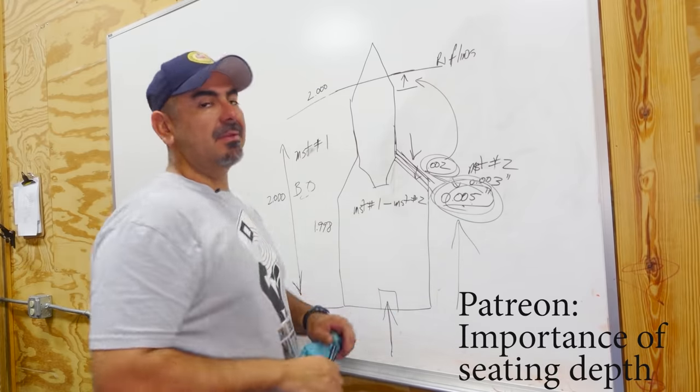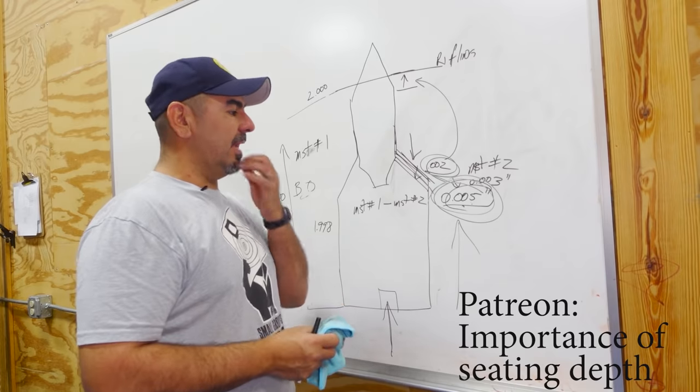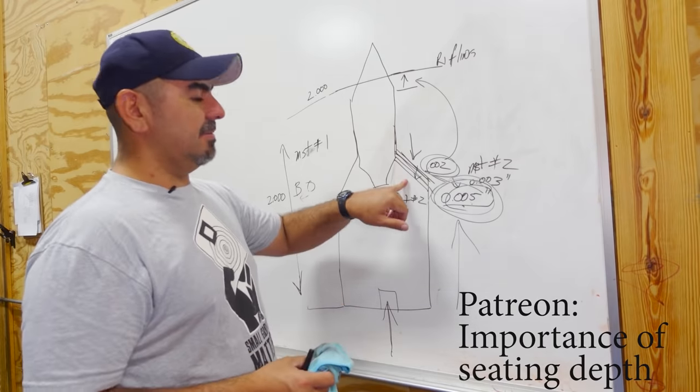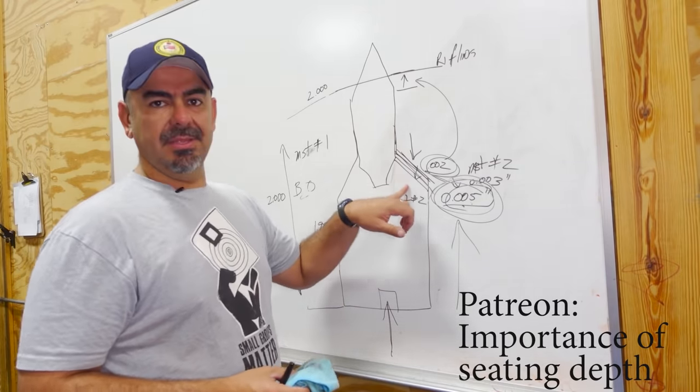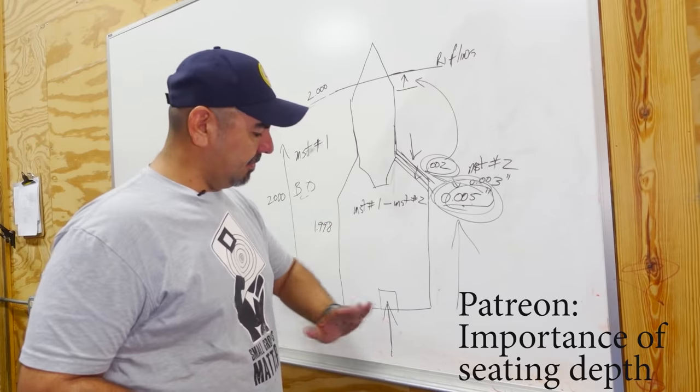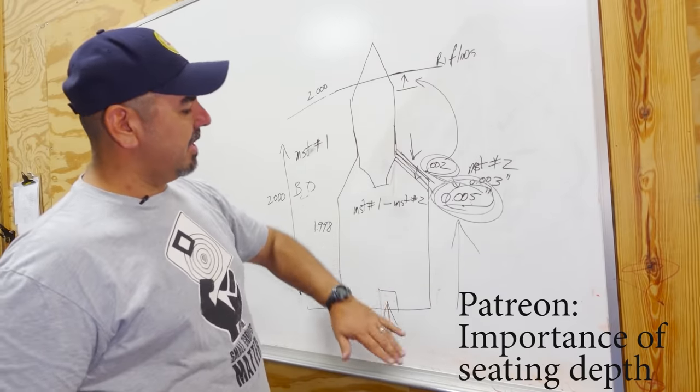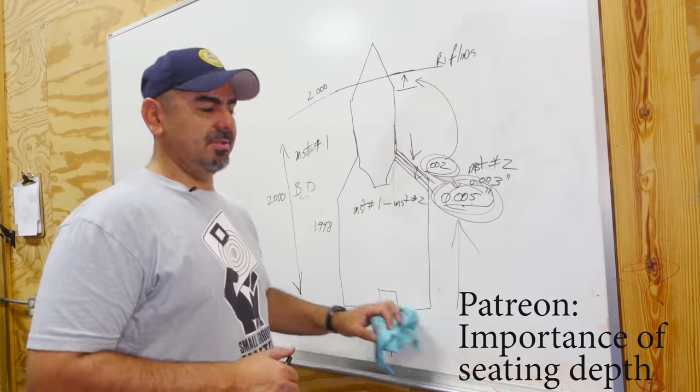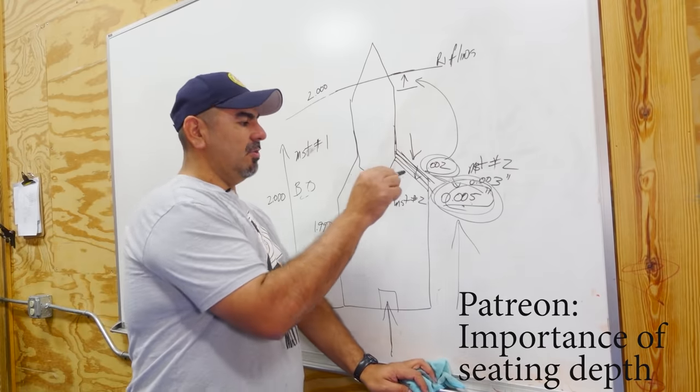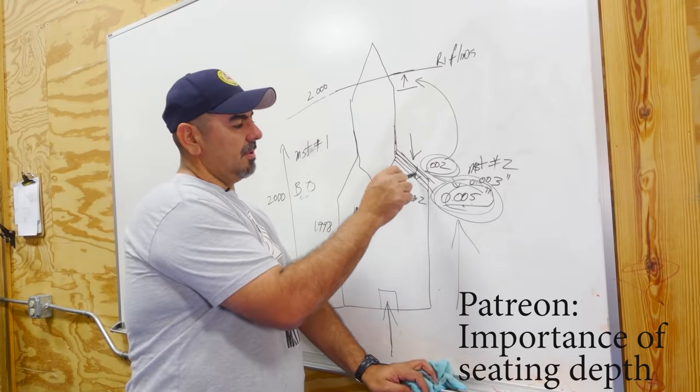I hope I explained that well enough for you guys. It is super important that everything's the same—your base to ogive and your base to shoulder dimensions. Otherwise, you will alter your seating depth by your shoulder bump. So be careful.